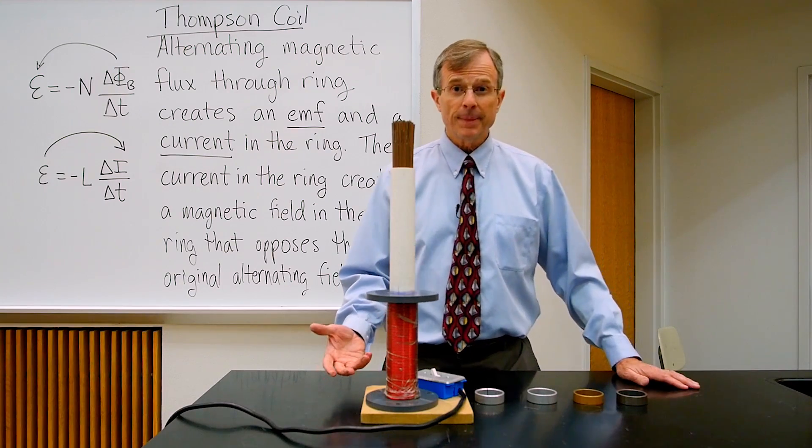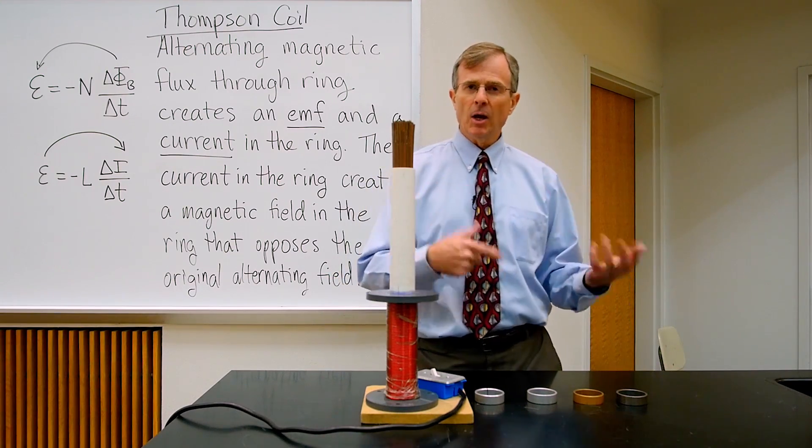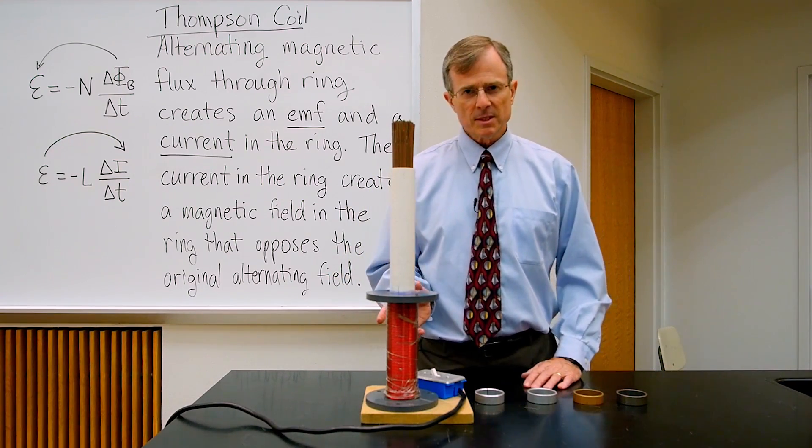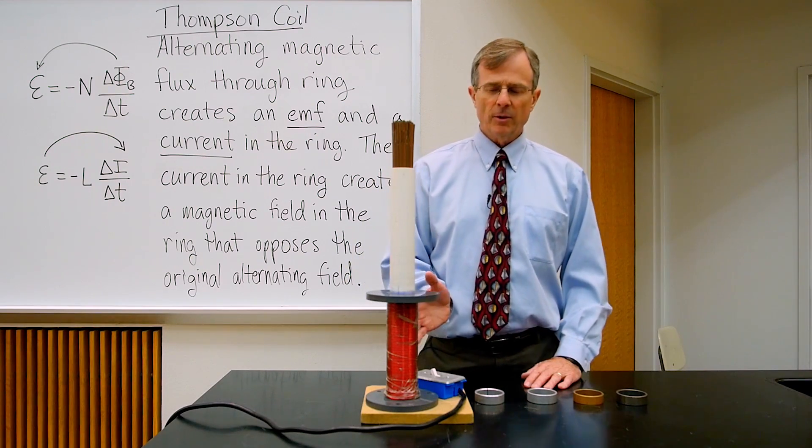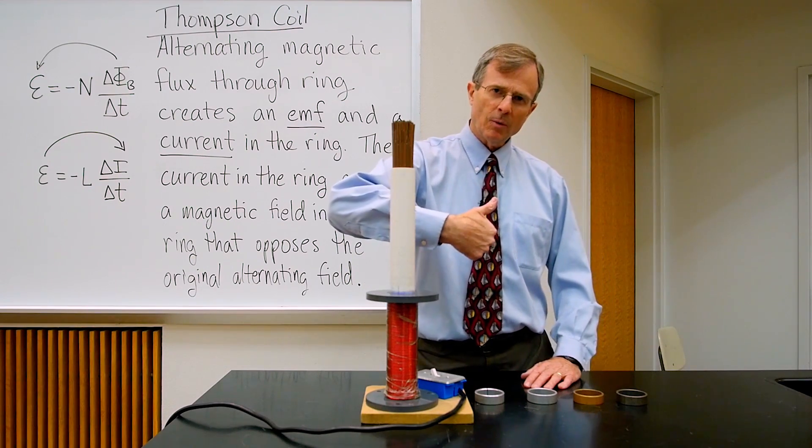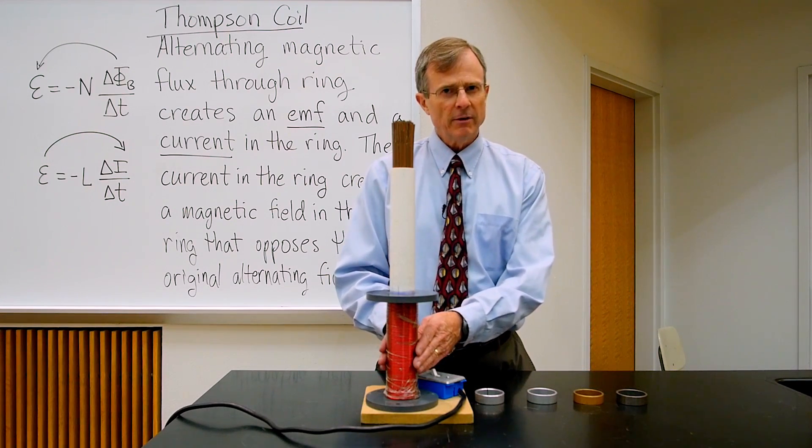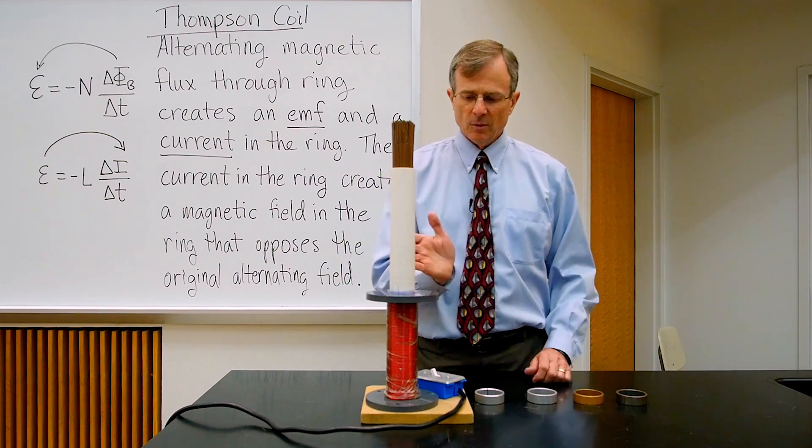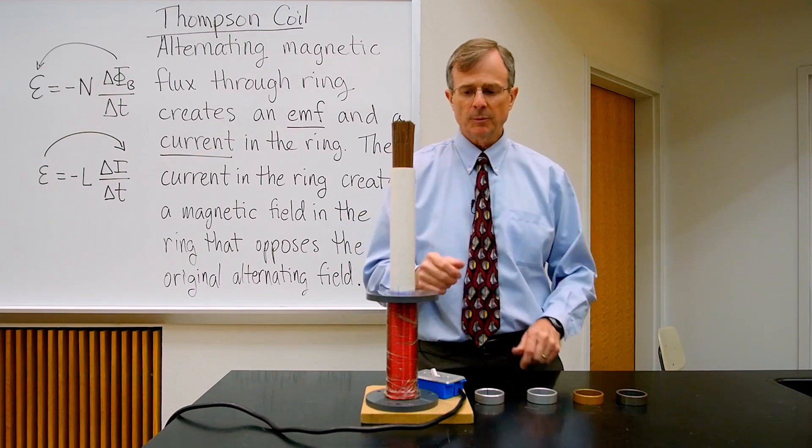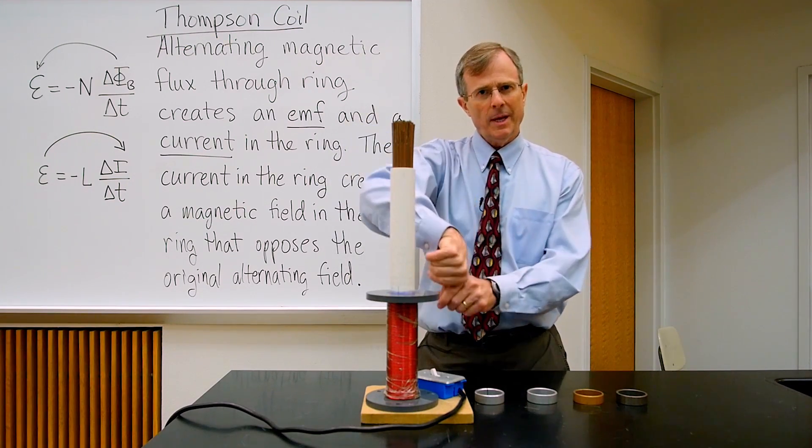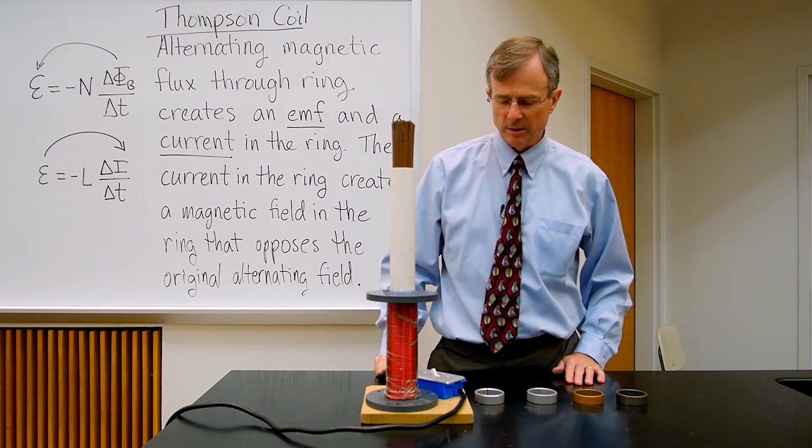We'll be energizing this with an alternating current. Sixty times a second, the direction of the current will change from clockwise to counterclockwise. And the magnetic field generated inside of the coil will be either up, when we have clockwise current, or down, when we have a counterclockwise current.